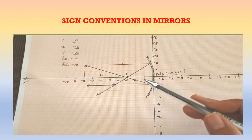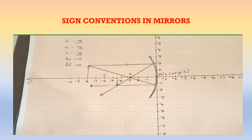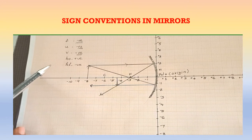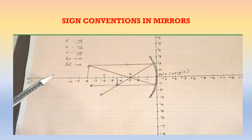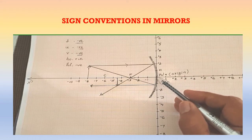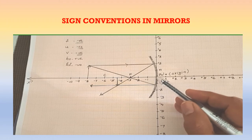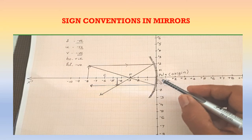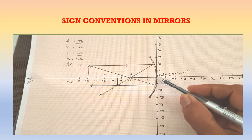Here there is a ray diagram of image formation in a concave mirror. We have to check whether the focus, object distance, image distance, HO, and HI are positive or negative. For that, we have to imagine a Cartesian plane with the pole of the mirror as the origin. The pole of the mirror coincides with the origin of that plane.